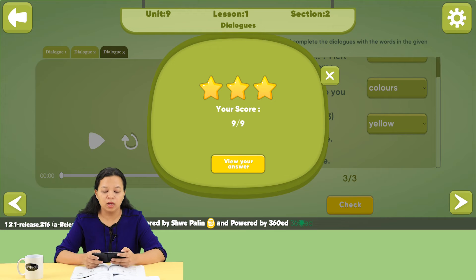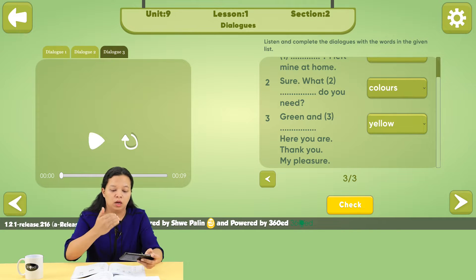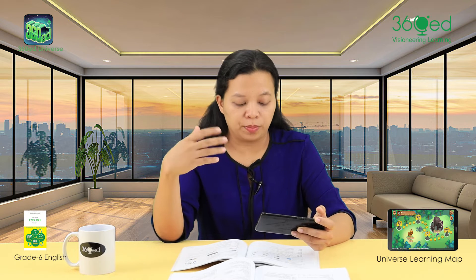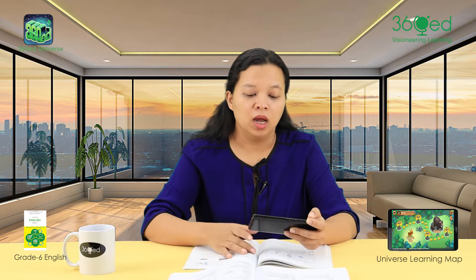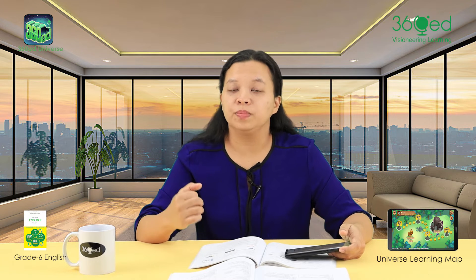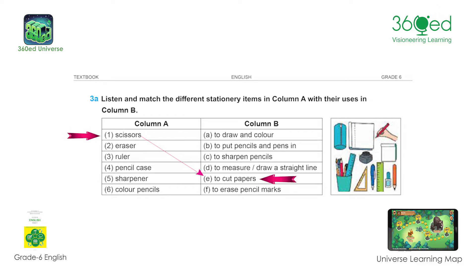Listen and match the different stationery items in Column A with their uses in Column B. Scissors — to cut papers. Eraser, ruler, pencil case, sharpener, color pencils, etc.